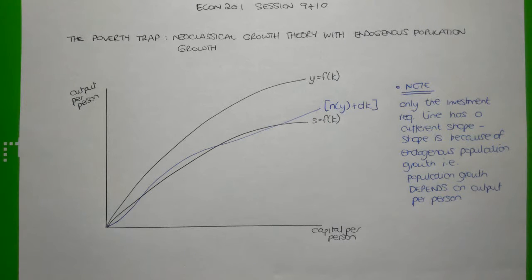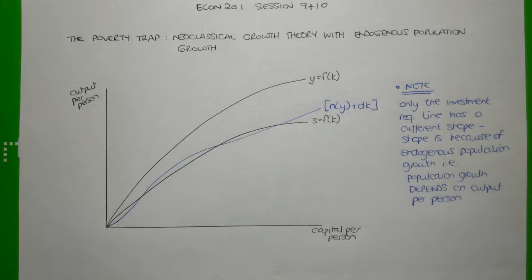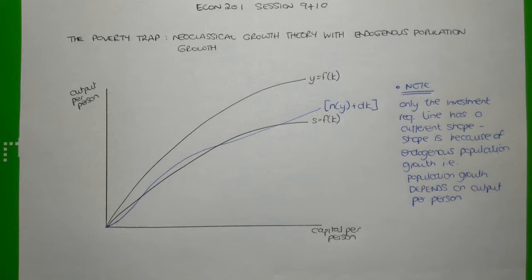The reason for that is that in this model we are assuming that the population growth rate is endogenous, and in fact that the population growth rate is dependent on the level of output per person. This is because it has been shown that as countries have different levels of output per person, or different living standards, those different levels of living standards are associated with different population growth rates. For example, when output per person is low, population growth is typically quite high — in very poor countries with low living standards, those countries typically have very high population growth rates.